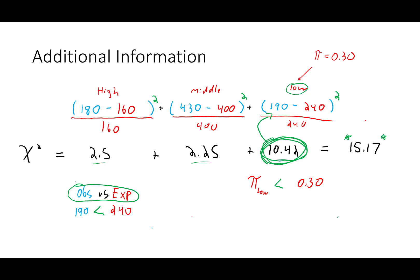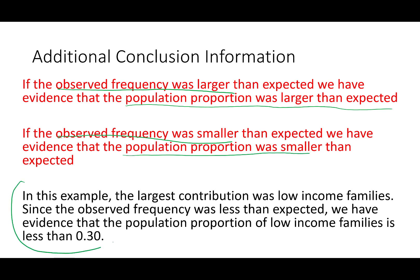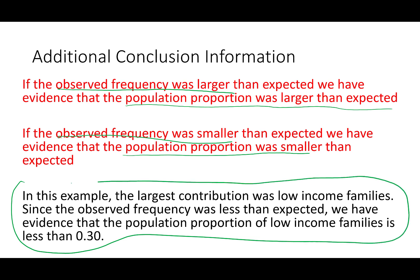Since we observed less than what we expected, we have evidence that the proportion of low-income families is less than what we expected. Once we find our biggest culprit, we can go inside that test statistic and compare what we observed to what we expected. If our observed frequency was larger than expected, we'd have evidence the population proportion would be larger. When our observed frequency was smaller, we'd have evidence the population proportion was smaller than expected. For our final conclusion, we would write: not only did we have evidence at least one proportion differs, but since what we observed was less than expected, we have evidence the population proportion of low-income families is less than 30%.